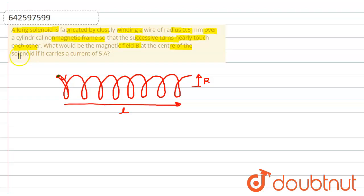First of all, we have given the cross-section radius of the wire. The cross-section radius of the wire, small r, is 0.5 mm.